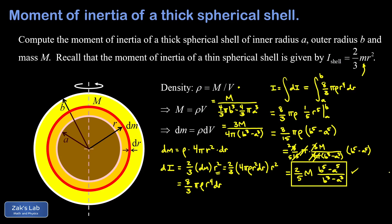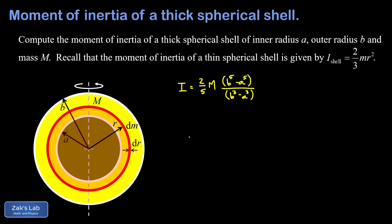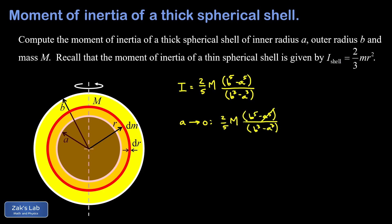Before finishing, we verify this formula reduces to known results. The easiest case is a equals zero: the carved-out inner section shrinks to zero, giving a solid sphere. Substituting a equals zero directly — since it's not a problematic limit — we get two-fifths M times b to the fifth over b cubed, which equals b squared. This gives the familiar formula two-fifths M b squared for the moment of inertia of a solid sphere.